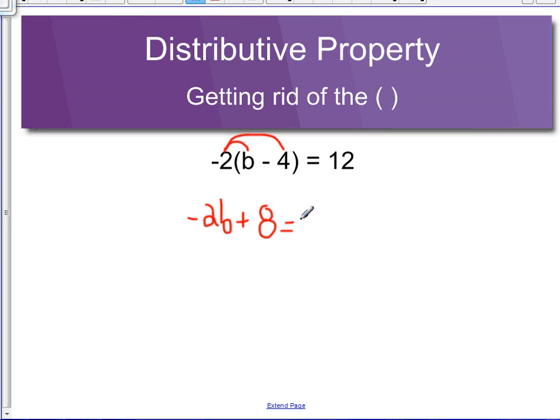Then I would get equals 12 and subtract 8 from both sides. And I would have negative 2b equals 4. So b would equal negative 2.